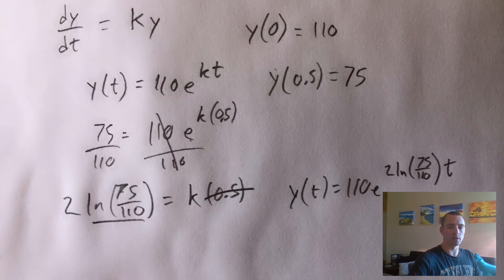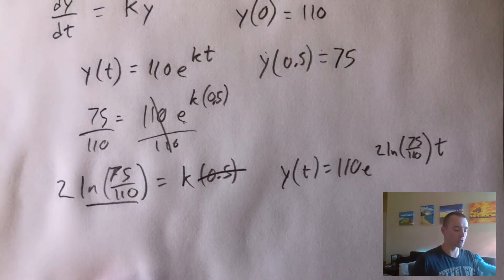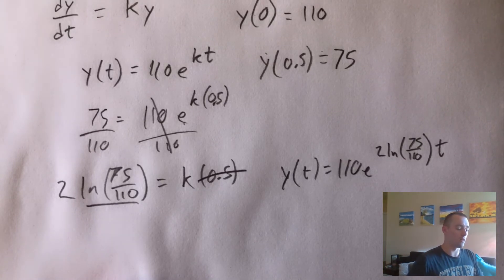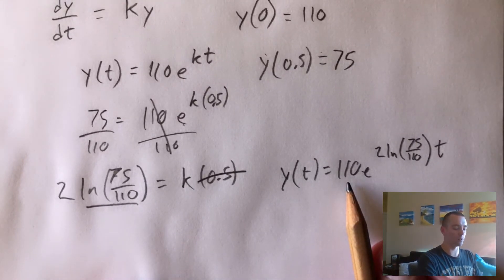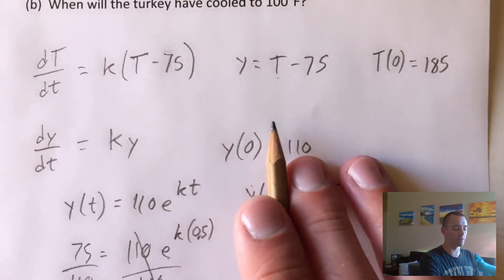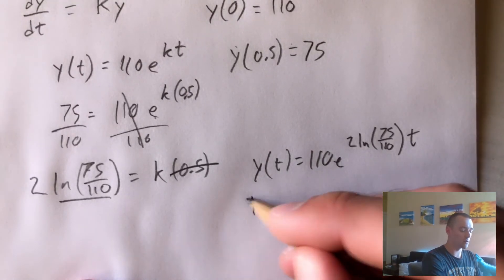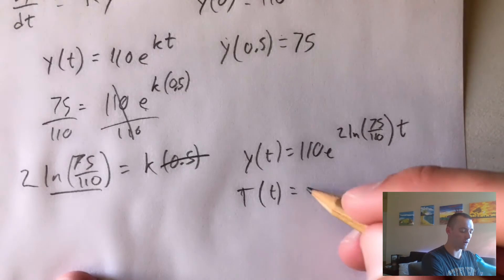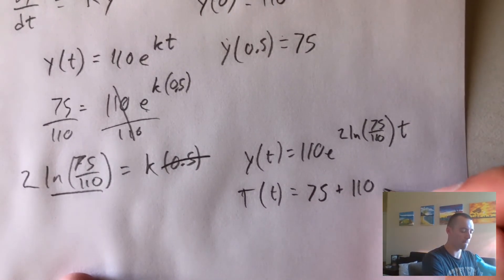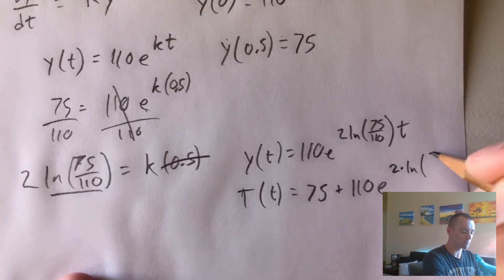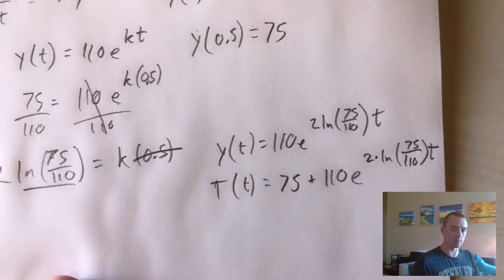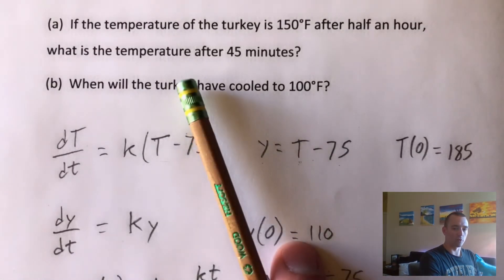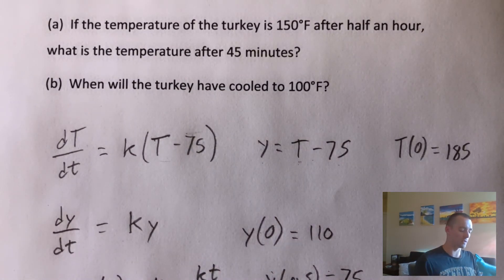This function tells us the Y value corresponding to whatever time T we plug in — not the temperature itself. To convert back to a temperature equation, all we have to do is add 75, since Y plus 75 gives us T. So we take the temperature equation and add 75 to this expression. This now gives us an equation for the temperature of our turkey at time T, and we can use it to figure out the temperature after 45 minutes and how long it takes to reach 100 degrees.